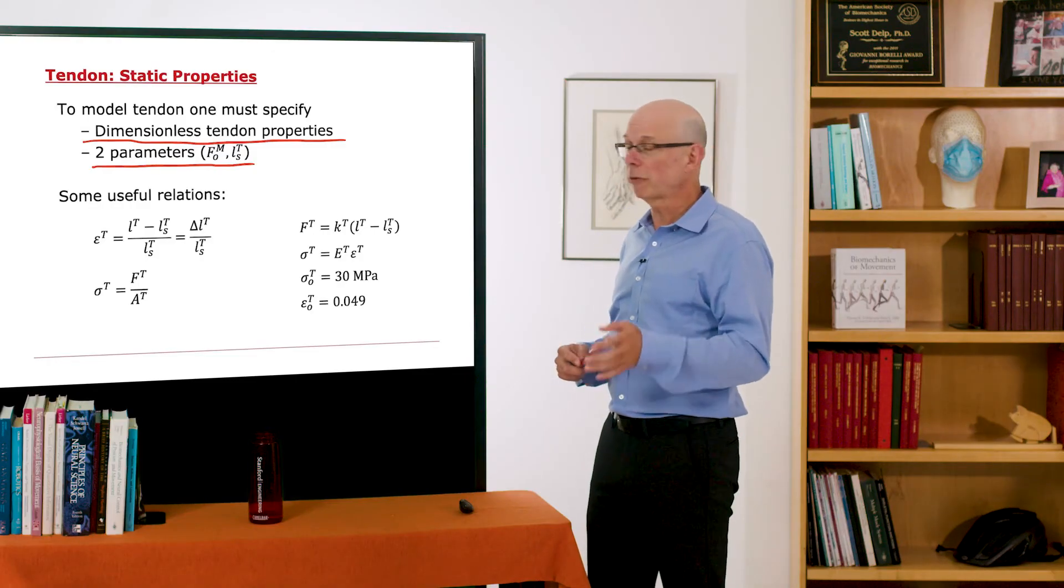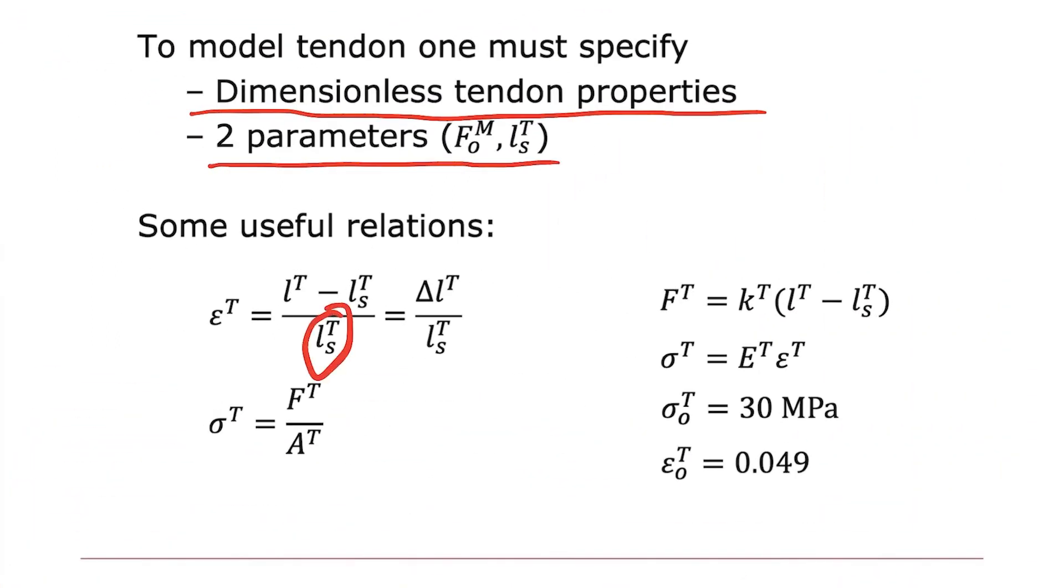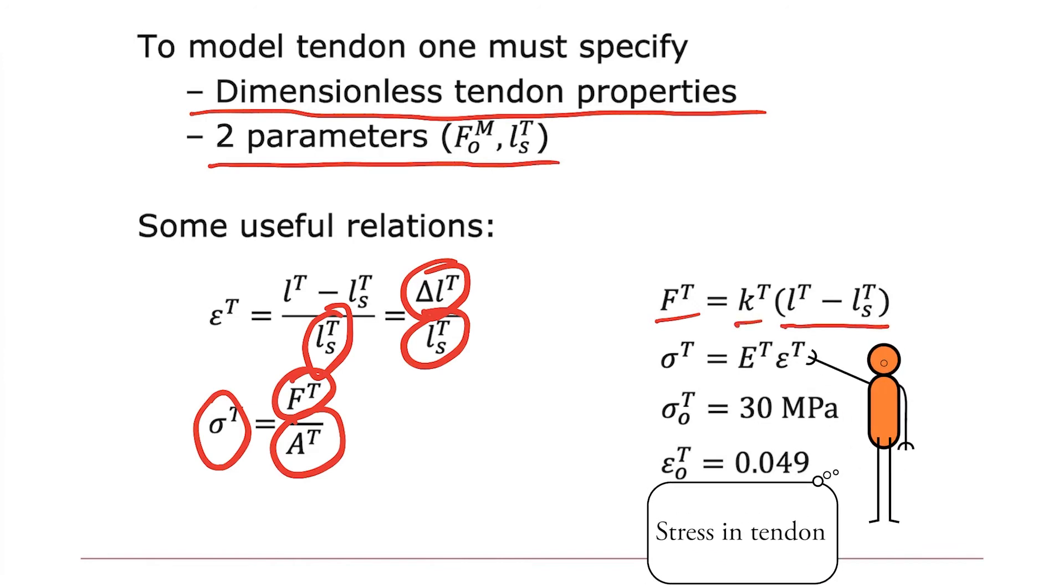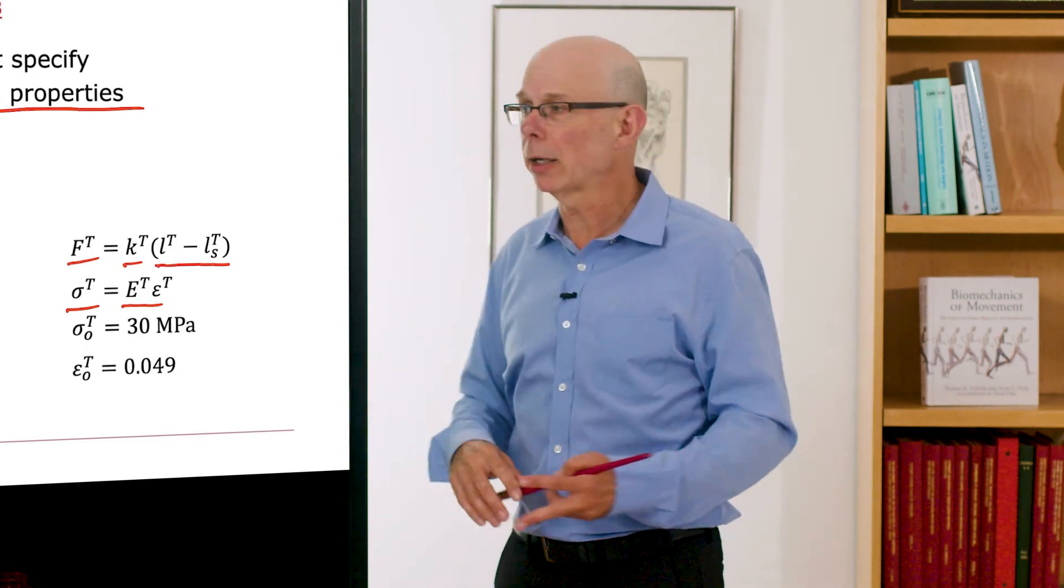Some other useful relationships. We've covered a couple of these so far, but knowing the strain in tendon is the stretch in tendon divided by the tendon slack length. The stress in tendon is the force in tendon over area of tendon. And if we're using a linear model, the force in tendon, if you can determine a stiffness of tendon, it's just the stretch in tendon times the stiffness of tendon. The stretch in tendon is the elastic modulus times strain in tendon.